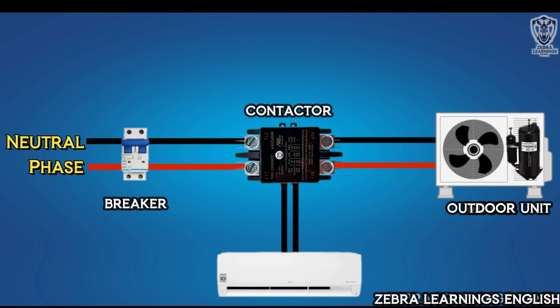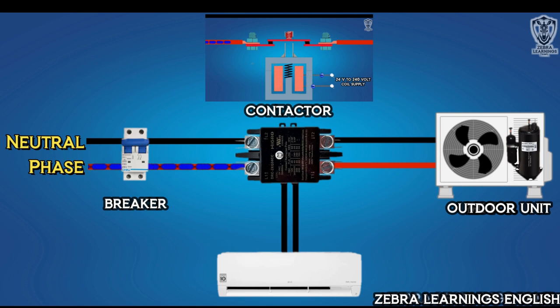Similarly, AC unit also gives power supply to outdoor unit through contactor. When the room temperature is high, the PCB in the indoor unit sends a 24-volt power supply signal to the contactor. Through this, contactor energizes and power supply flows. Compressor and fan motor start running.